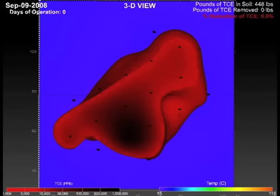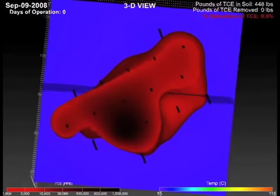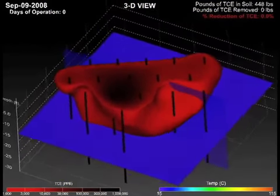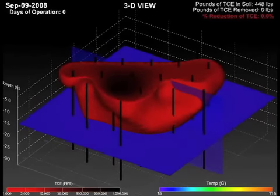This animation illustrates in-situ thermal remediation of chlorinated volatile organic compounds in soil and dolomite bedrock using TRS electrical resistance heating.